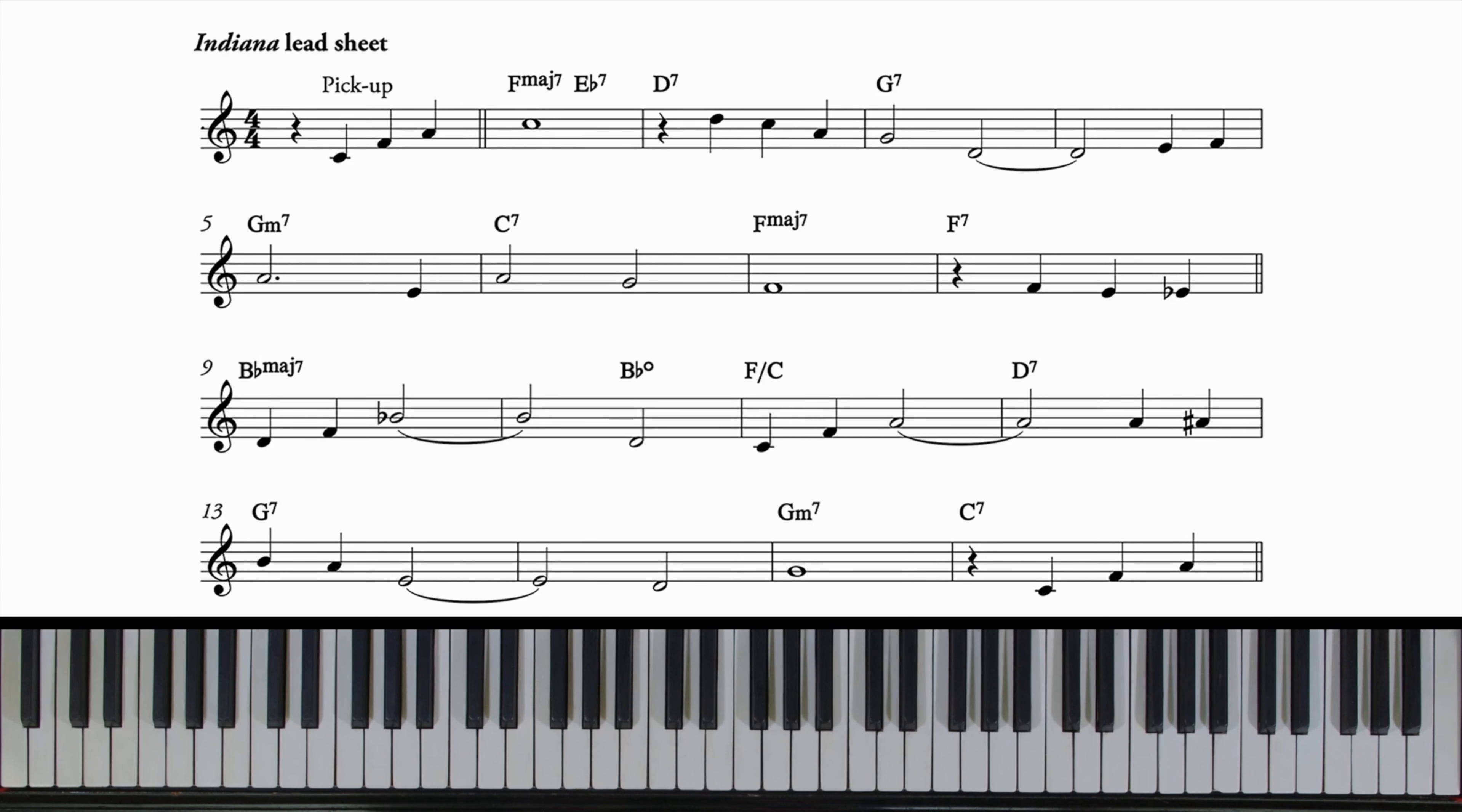It was common practice in the bebop era, in the 40s and 50s, to compose tunes over the chord sequences of well-known standards. There are many examples of this.